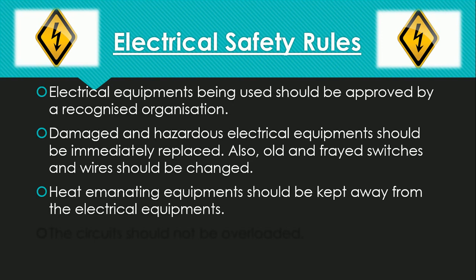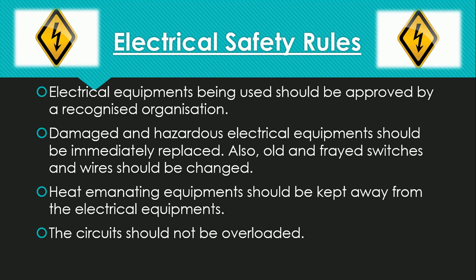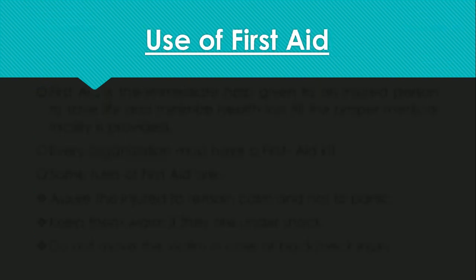Heat-emitting equipment should be kept away from electrical equipment. If there is any equipment inside the workplace which emits heat, it should be kept away from electrical equipment. Like computers and CPUs, mobile devices, or other such devices that emanate heat should be placed a little away from switches or electrical equipment. Also, circuits should not be overloaded — it should not be the case that there is one switch with so many plugs put into it.